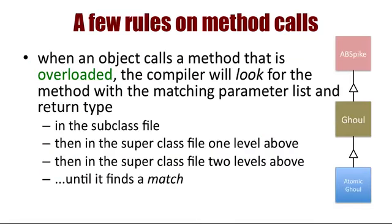Suppose the method called is overloaded, meaning that the name of the method is defined more than once, but the parameter lists differ. The first priority is to find a method definition with matching return type and parameter list. Once again, the compiler would look for the definition in the first class file of the object, then in the parent class, and in the parent of the parent class, and so on until a suitable definition is found.